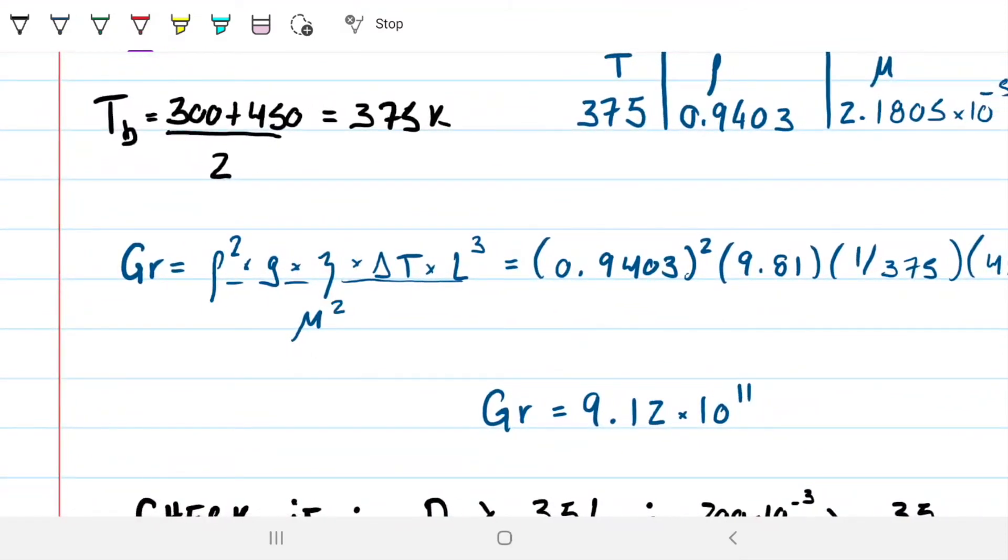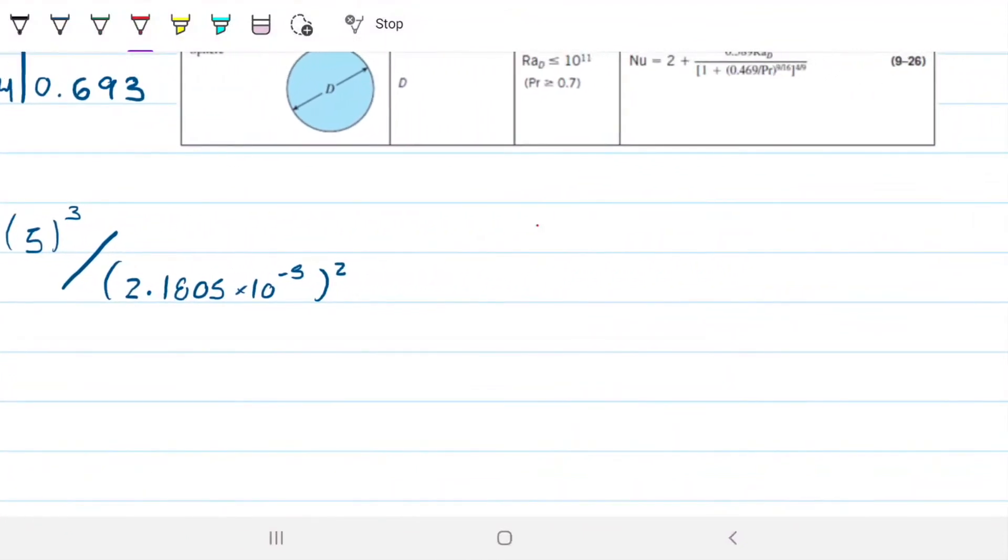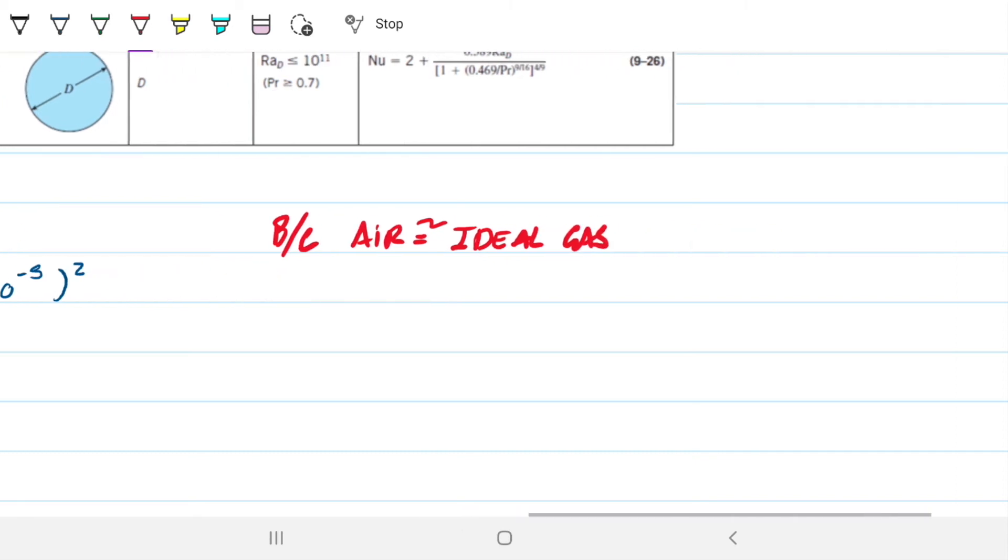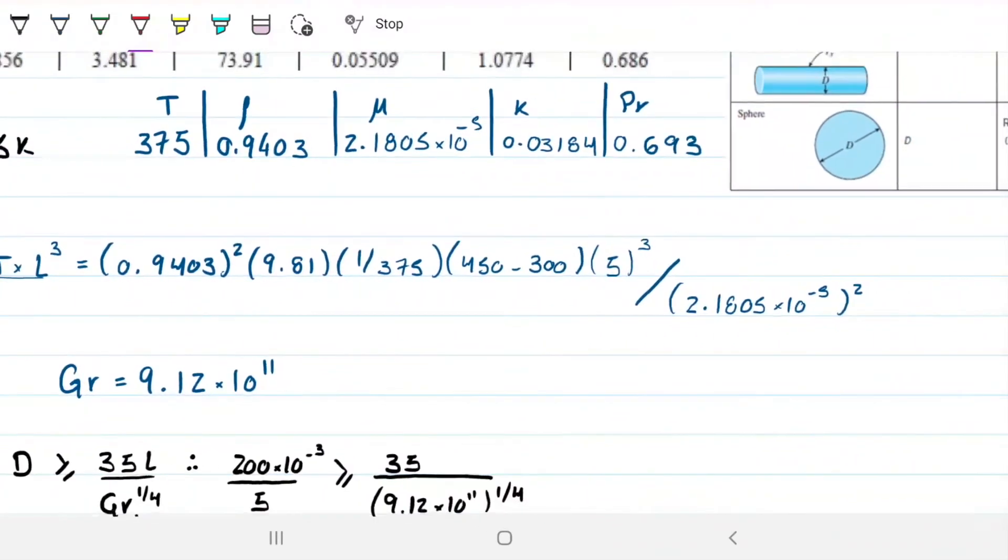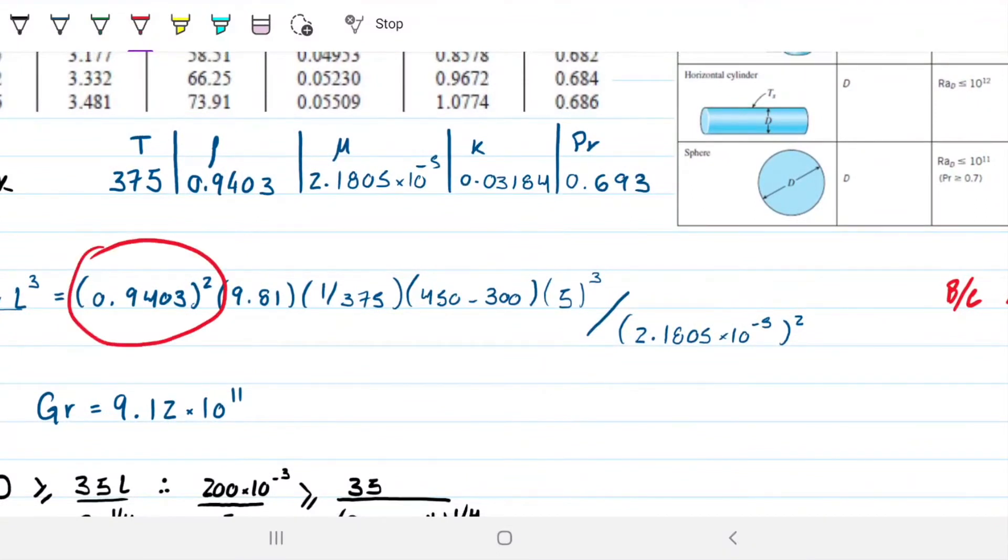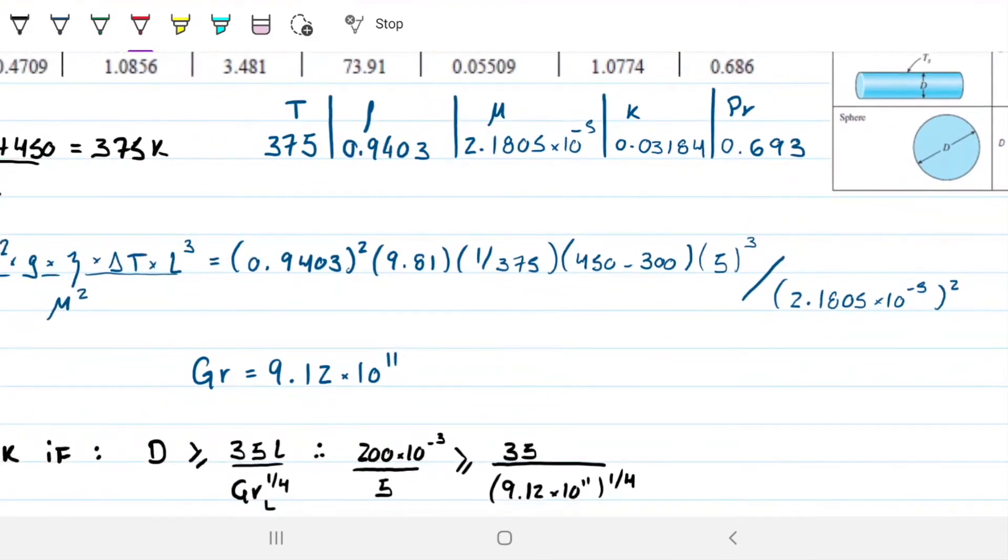So what we need to do is calculate Grashoff, see if this condition is met, and then if it's met, what we're going to do is go to the vertical plate analysis. So Grashoff, we know Grashoff is density squared, dynamic viscosity squared, gravity, beta, delta T, CL to the third. In this case, like the table said, CL is the length or the height of this cylinder. Things to be considered. This guy, this is air. We're dealing with air, so it's an ideal gas, so because it's an ideal gas, because air can be approximated to an ideal gas.